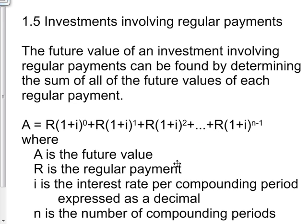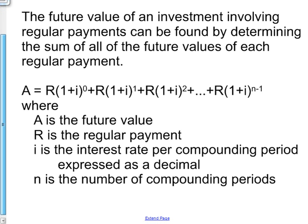Where A is the future value, R is the regular payment, i is the interest rate per compounding period expressed as a decimal, and n is the number of compounding periods.